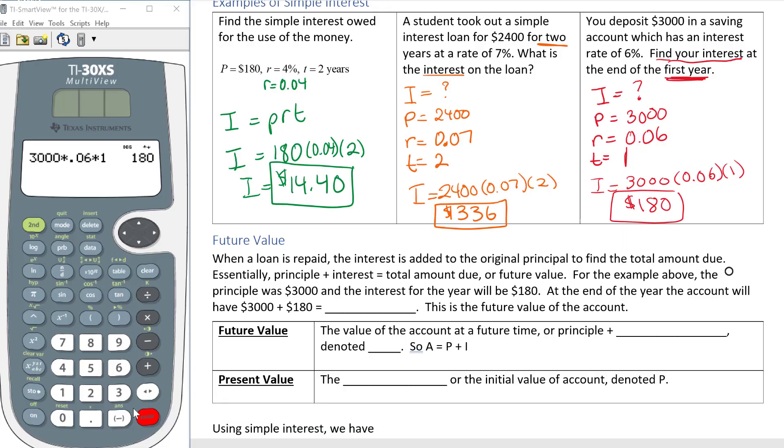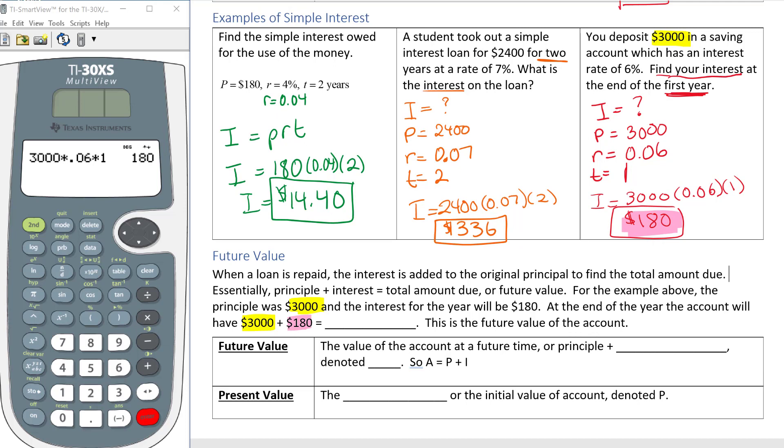Now we're going to talk about future value. When a loan is repaid, the interest is added to the original principal to find the total amount due. Essentially principal plus interest equals total amount due or future value. For the example above, the principal was $3,000. At the end we found out that we had $180 worth of interest. So at the end of the year the account will have $3,000 from my original deposit plus $180 that I got from interest, so that gets me a total of $3,180. And that is what the future value of the account is.